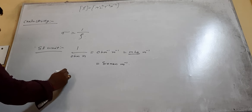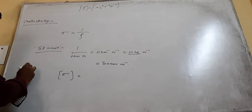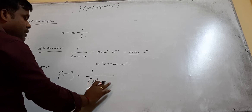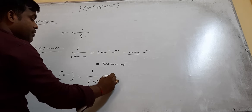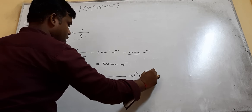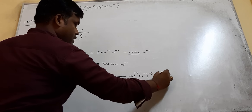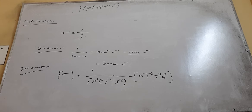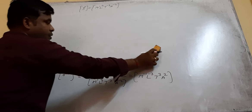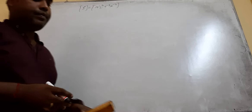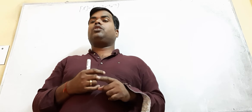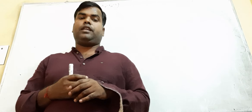The dimension of conductivity is the reciprocal of the resistivity dimension M1L3T-3A-2, giving M-1L-3T3A2. Since resistivity does not depend upon shape and size of the conductor, conductivity also does not depend upon the shape and size of the conductor.